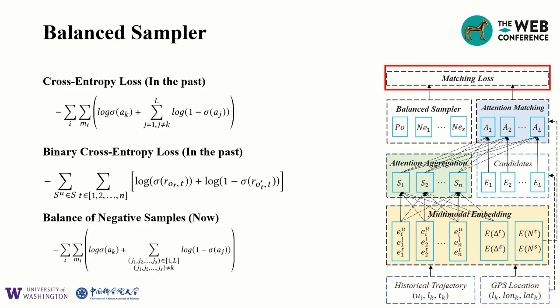We also use a balanced sampler to compute the matching loss. Because cross-entropy loss uses all the negative samples, it optimizes the model to avoid wrong predictions rather than make correct predictions. The binary cross-entropy loss, however, does not make an exploitative use of abundant negative samples in the dataset. We tune the hyperparameter of negative samples to make a balanced sampling between the positive sample and the negative samples.